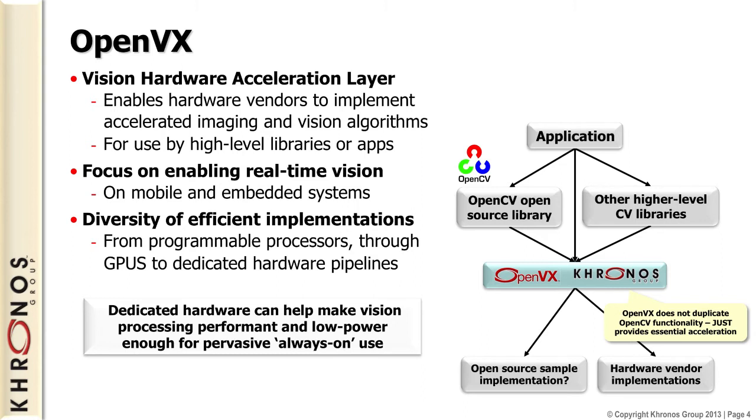We're creating APIs to enable application developers to tap into sensors easily. This is a vision acceleration API. There have been standards like OpenCV — which despite the Khronos-sounding name, is not a Khronos standard. It's an open source project with no formal specification and many contributors, providing an extensive library of vision functionality. But it's not really designed to be accelerated. There are thousands of functions, and silicon vendors like NVIDIA have tried to pick up a couple dozen, but there are a thousand more to go. All the silicon vendors end up choosing different subsets, so it's not an ideal acceleration platform.